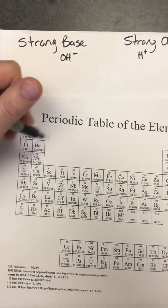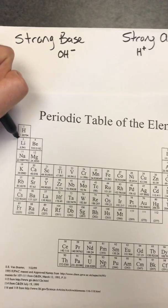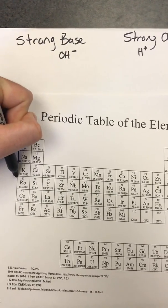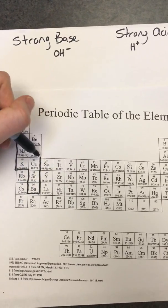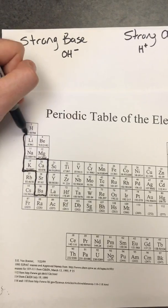So for a strong base, we're going to start at lithium, sodium, potassium. And we'll make this little zigzag thing, all the way down to calcium, strontium, and barium.